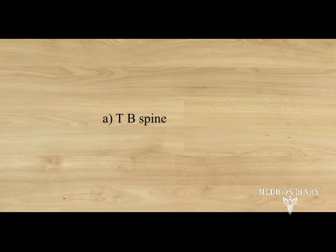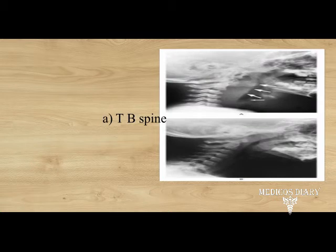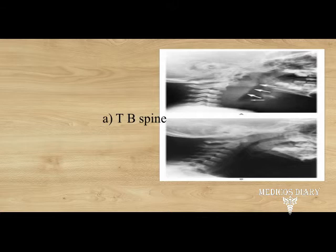Answer: option A, TB spine. Retropharyngeal abscess most commonly occurs in children below three years and is mainly of two types — acute and chronic. Acute retropharyngeal abscess is due to suppuration of retropharyngeal lymph nodes secondary to infection in the adenoids, nasopharynx, posterior nasal sinus, or nasal cavity. Chronic retropharyngeal abscess is due to caries of the cervical spine or tuberculosis — infection of retropharyngeal lymph nodes secondary to tuberculosis of deep cervical nodes. Here the cause is TB spine, so the answer is TB spine.